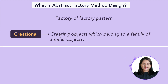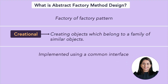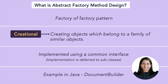Just like the factory method design pattern, this pattern is also implemented using a common interface, and implementation is deferred to the subclasses or concrete classes. One example of abstract factory method design pattern is Java's DocumentBuilder — you can check that source code to understand more about how this pattern is implemented.